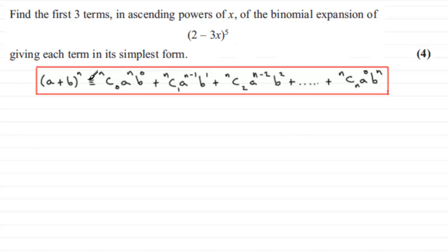It can be shown that this is identical to nC0 a to the power n times b to the power 0. And then we do plus nC1, we drop the power of a by 1, so it's now a to the power n minus 1, and increase the power on b by 1, so it's now b to the power 1.